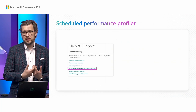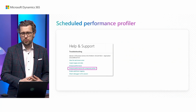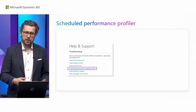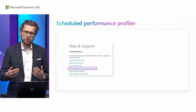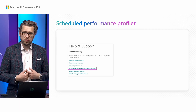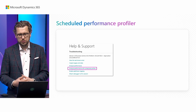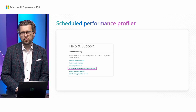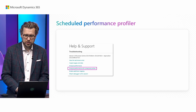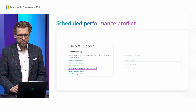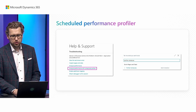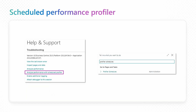Just like with the in-client performance profiler, you can invoke this from Help and Support in the troubleshooting section. There's a new option called 'Analyze Performance with Scheduled Profiler', or you can search in Tell Me for 'Profiler Schedules'. Let's see how that works.